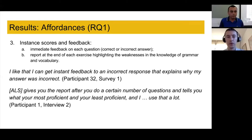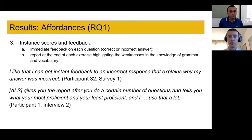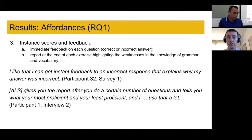The third affordance was instant scores and feedback provided by the adaptive learning systems. Students received two types of feedback: immediate feedback on each question — whether the answer was correct or incorrect — and a report at the end of each exercise highlighting weaknesses in grammar and vocabulary knowledge. As one participant said: 'I like the idea that I can get instant feedback to an incorrect response that explains why my answer was incorrect.' Another participant noted that the system gives you a report after a certain number of questions telling you what you're most and least proficient in, and that they used it a lot.